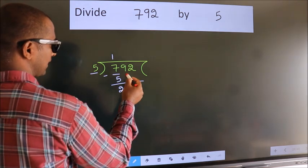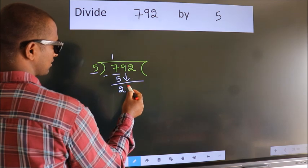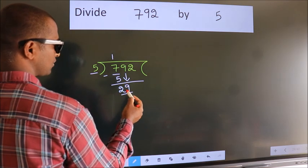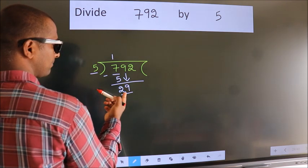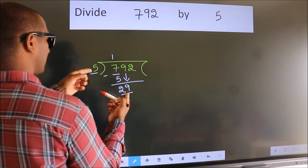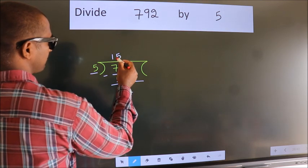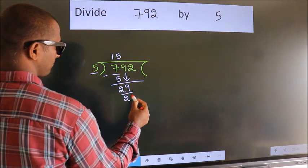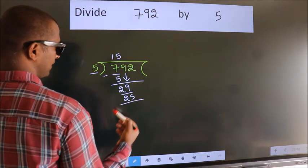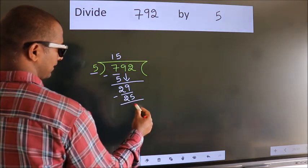After this, bring down the beside number. So 9 down, making 29. A number close to 29 in the 5 table is 5 fives, which is 25. Now we subtract and get 4.